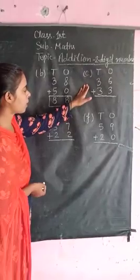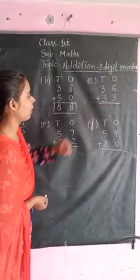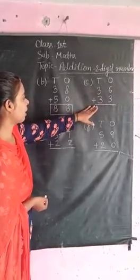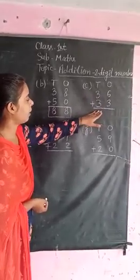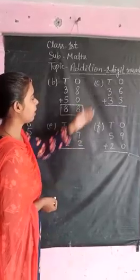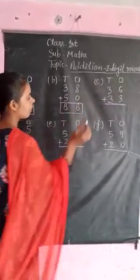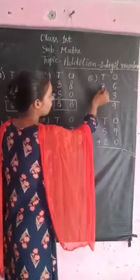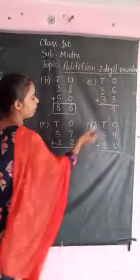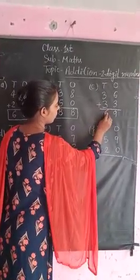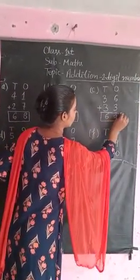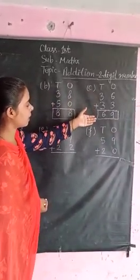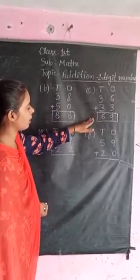Next, number is 36 plus 33. 36 plus 33. Addition is 6 plus 3 equals 9, 3 plus 3 equals 6. 36 plus 33 equals 69. Total number is 69.